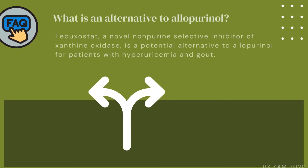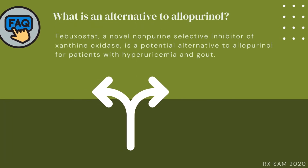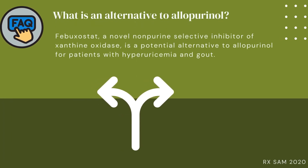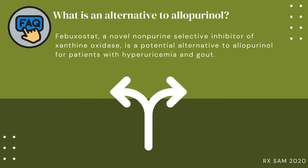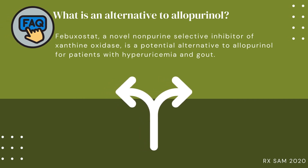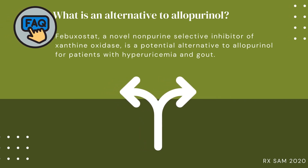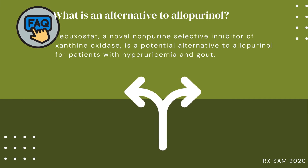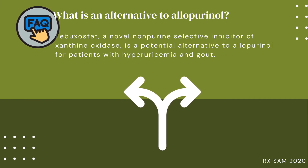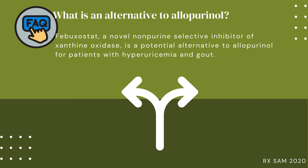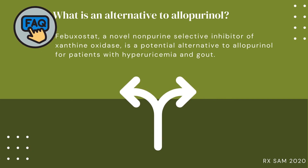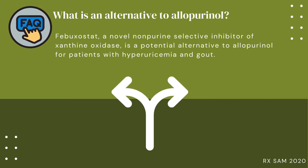What is an alternative to allopurinol? Febuxostat, a novel non-purine selective inhibitor of xanthine oxidase, is a potential alternative to allopurinol for patients with hyperuricemia and gout.